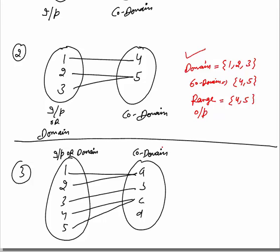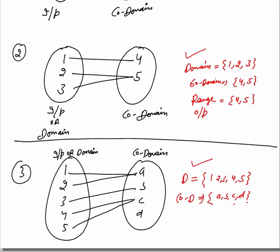Third example: input or domain set is 1, 2, 3, 4, 5. Co-domain set is A, B, C and D. In this function, putting 1 as input gives output A. 2 is the input, output is A. 3 is the input, output is B. Is this a function? Yes, this is a function because the definition only says that each and every input should have a single output. In our case, each and every input has a single output. Domain of this function is 1, 2, 3, 4, 5. Co-domain would be A, B, C and D. Range means output — outputs are only A, B and C.